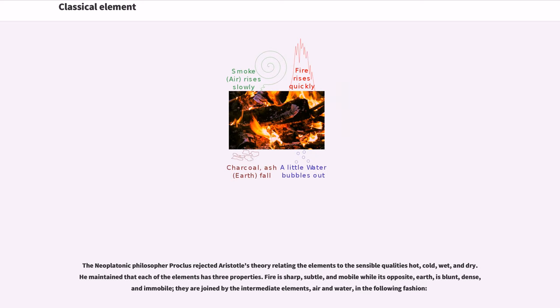The Neoplatonic philosopher Proclus rejected Aristotle's theory relating the elements to the sensible qualities hot, cold, wet, and dry. He maintained that each of the elements has three properties. Fire is sharp, subtle, and mobile while its opposite, earth, is blunt, dense, and immobile. They are joined by the intermediate elements, air and water, in the following fashion.